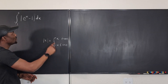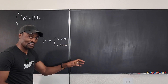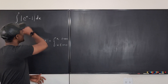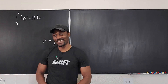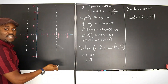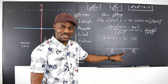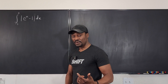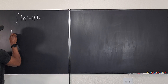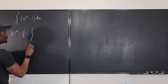So this is going to be just e to the x minus one, if e to the x minus one is greater than or equal to zero. And if it is less than zero, you have to create a second integral for it. And let's get into it.